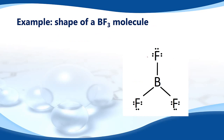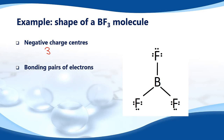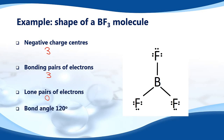Next is the shape of the BF₃ molecule — boron trifluoride. Here's the Lewis structure. We count the negative charge centers around the central atom: one, two, three — three negative charge centers. The number of bonding pairs around the central atom: one, two, three. And lone pairs around the central atom: zero. With three negative charge centers, three bonding pairs, and zero lone pairs, the bond angle is 120 degrees and the shape is trigonal planar.